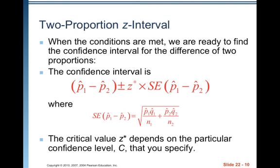When the conditions are met, we are ready to find the confidence interval for the difference of two proportions. The confidence interval is the difference between our two sample proportions plus or minus Z star times the standard error of the difference of our two sample proportions. The critical value Z star depends on the particular confidence level C that you specify, just like it did previously.